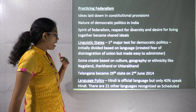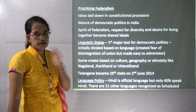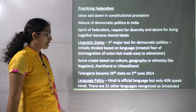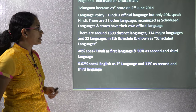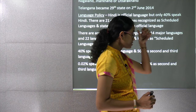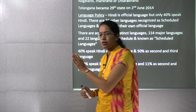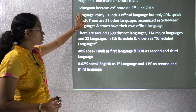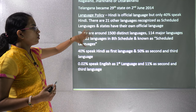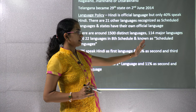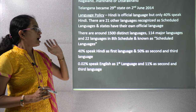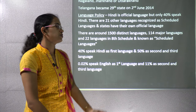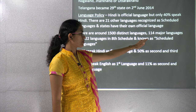Despite linguistic division, some states are classified on the basis of culture, ethnicity, or geographical conditions — for example, Nagaland, Jharkhand, and Uttarakhand. The last state to be separated was Telangana, which became a separate state in 2014. India follows a language policy where Hindi is the official language, but for all judicial purposes English remains the official language. There are 22 languages recognized in the scheduled languages of India, listed in the 8th Schedule and on currency notes.